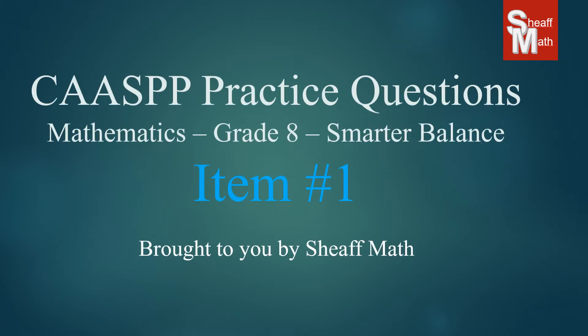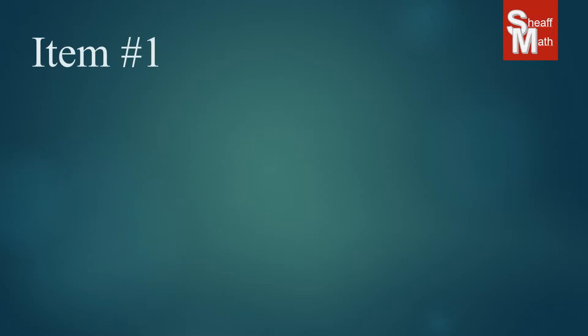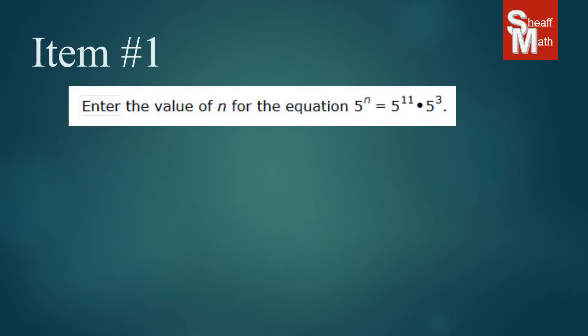CASPI practice test item number one. Enter the value of n for the equation 5 to the n equals 5 to the 11th times 5 to the third.